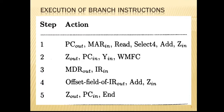Since the updated PC value is already available in register Y, directly the offset X is gated onto the bus in step 4. We assume the updated PC value is already available in register Y, so we just need to get the offset X value onto the bus. Then an addition operation is performed — offset of IR OUT, ADD, Z IN. After loading the offset value, we perform an add operation. The result, which is the branch target address, is then loaded into the PC in step 5.